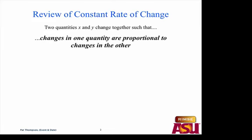Changes in y are proportional to changes in x. Every change in y is some constant multiple of a change in x. What is that constant k? It is change in y over change in x. That constant multiple k is the constant rate of change. Every change in y is the same size relative to its corresponding change in x. That value k is the constant rate of change. If you're not getting this, go back and review over and over.